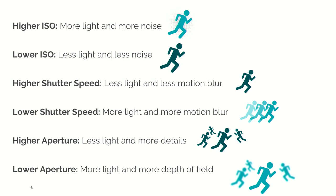To summarize: a higher ISO will give you more light and more noise; a lower ISO will give you less light and less noise. A higher shutter speed will give you less light and less motion blur; a lower shutter speed will give you more light and more motion blur. A higher aperture will give you less light but more details in your image — more things in focus. And a lower aperture will give you more light and more depth of field with less things in focus.